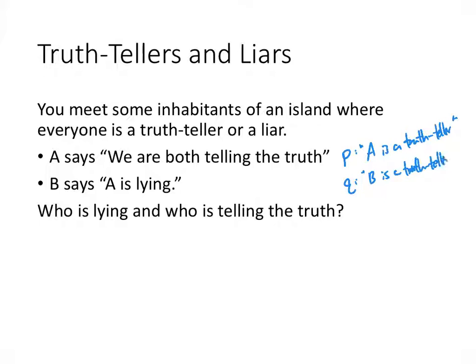You might wonder why we don't call these letters A and B — those seem like reasonable letters. Well, A and B are the actual people, while P and Q are the propositions. P represents not just person A, but the proposition that A is a truth-teller. If P is true, then A really is a truth-teller; if P is false, then A is not. Q similarly tells us whether B is a truth-teller, which is what we're trying to figure out.